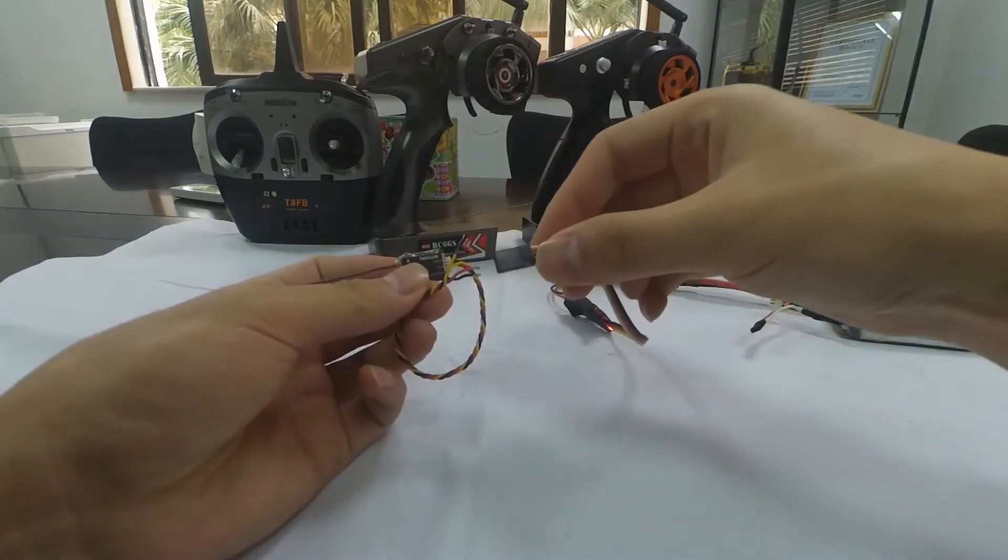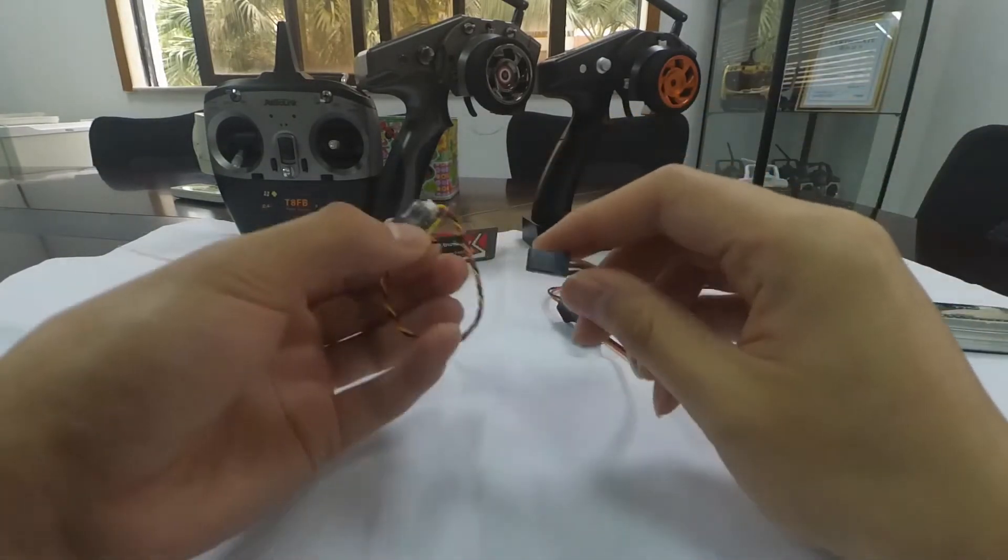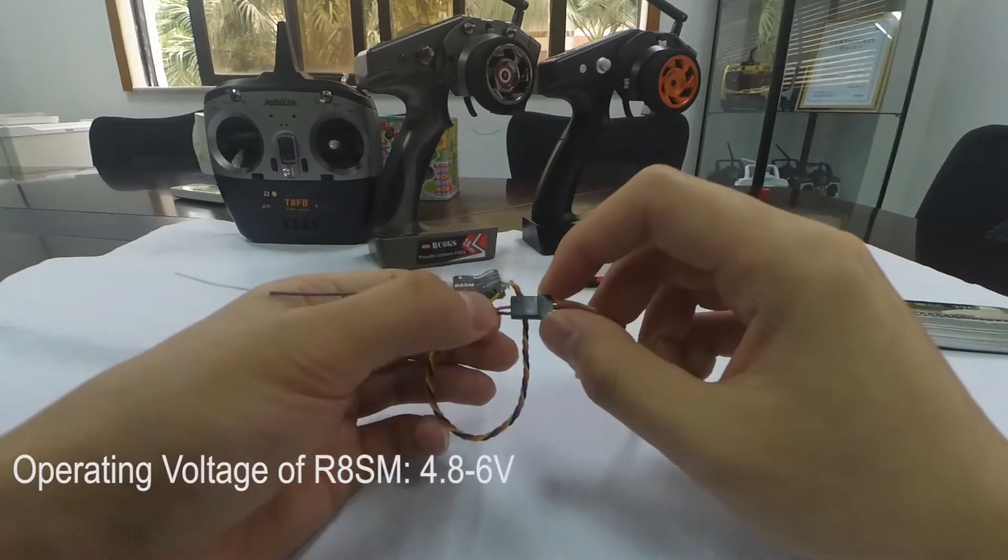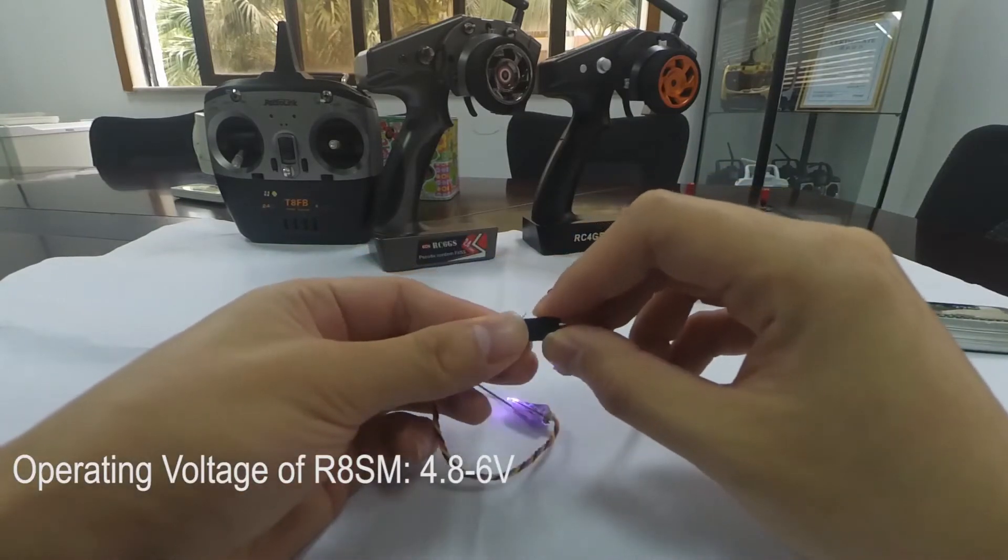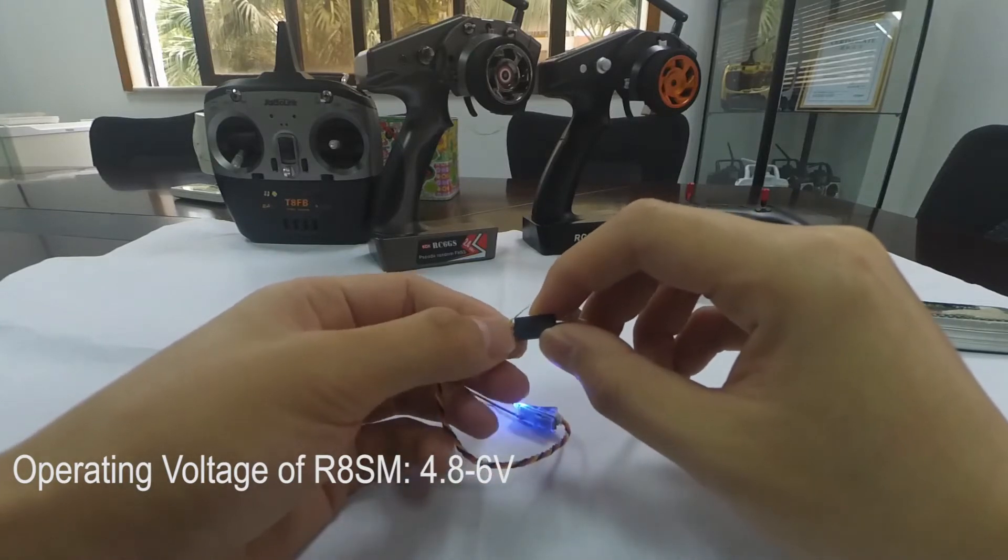Now I'm going to show you how to do the binding and how to change signal output. Power on the RASM first. Make sure the correct polarities with red wire to red wire while black wire to black wire.